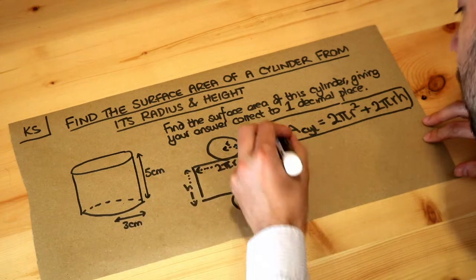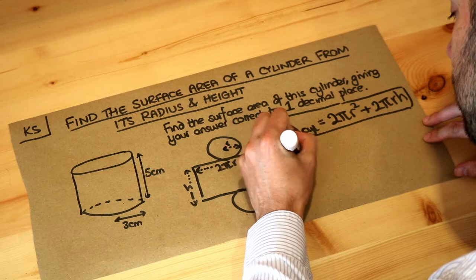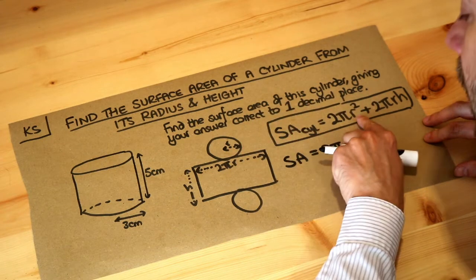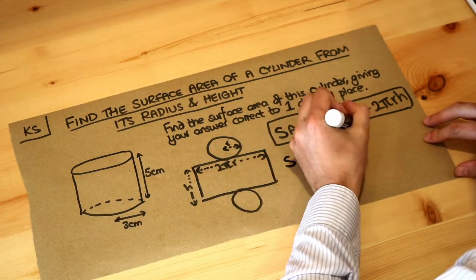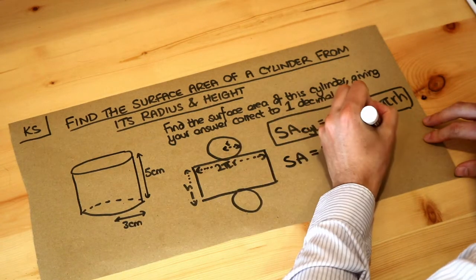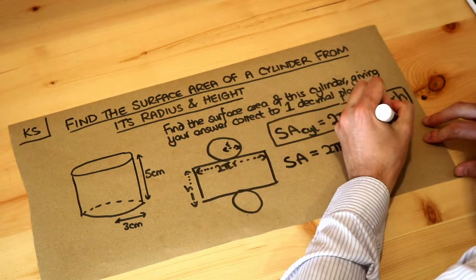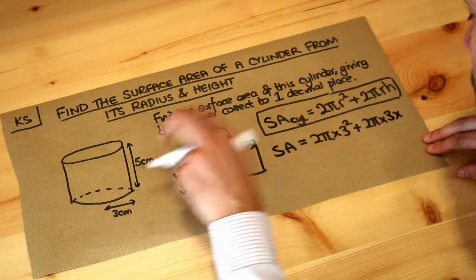So now let's just use the lengths that we have. The surface area of our cylinder is 2 times π times the radius squared where the radius is 3 plus 2 times π times the radius 3 times by the height which is 5.